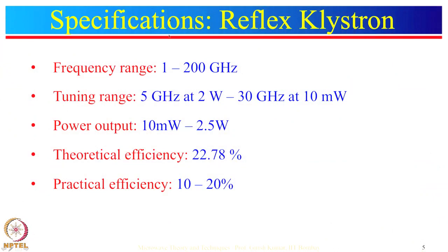That is all about the working of reflex klystron. Let us look at specifications of practically available reflex klystrons. The frequency range is roughly from 1 GHz to 200 GHz, with a tuning range from 5 GHz at 2 W to 30 GHz at 10 mW. The power output ranges from 10 mW to 2.5 W. The theoretical efficiency is about 20 percent, and the practical efficiency is between 10 and 20 percent.